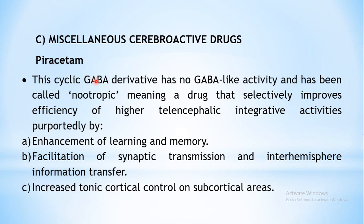Piracetam is actually a cyclic GABA derivative. GABA — gamma amino butyric acid — as you are all aware, is an inhibitory transmitter in your CNS. So piracetam is a cyclic derivative of GABA. But even though it is a derivative of GABA, still it does not have any GABA-like activity.